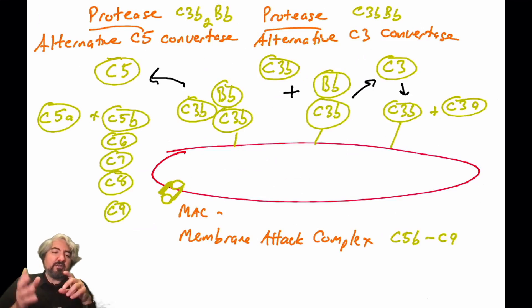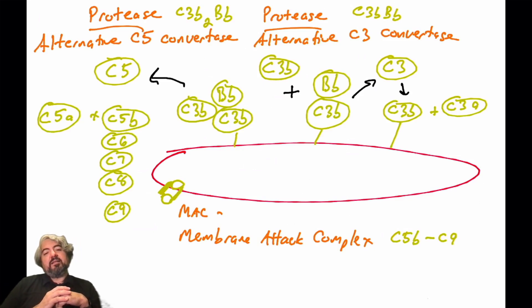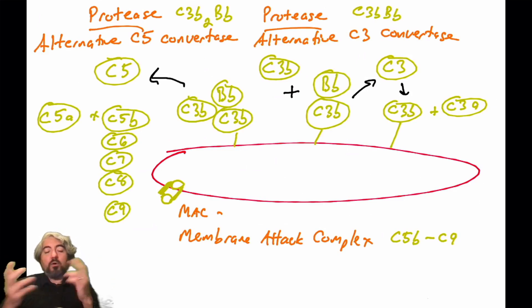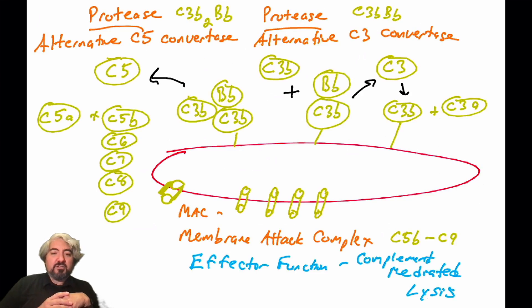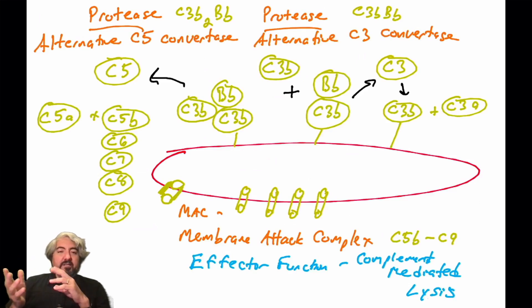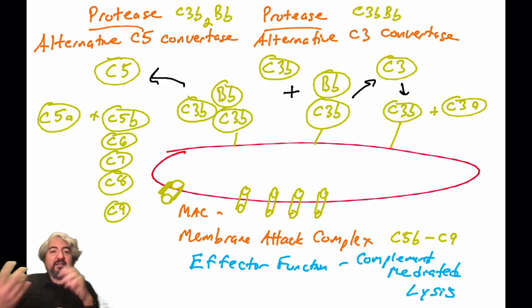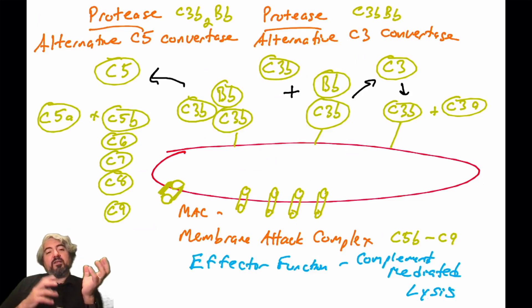This complex of C5b, C6, C7, C8, and multiple C9 proteins forms what is known as the MAC — the membrane attack complex — sometimes written as C5b-9, referring to the proteins C5b through C9. Membrane attack complexes are an effective mechanism to help destroy the pathogen. To summarize the alternative pathway: the alternative C3 convertase forms and cleaves C3, producing C3b which leads to complement fixation, and also to the formation of the alternative C5 convertase.